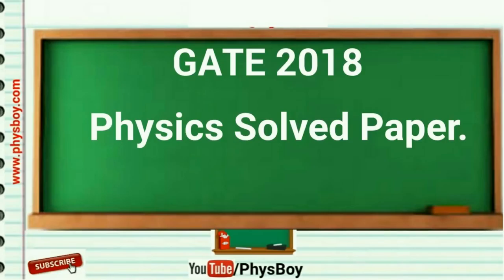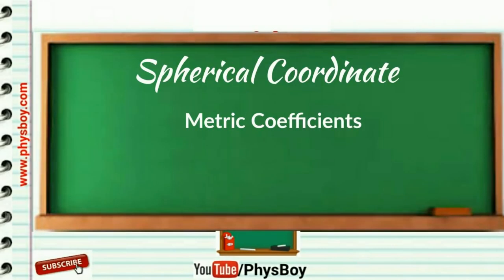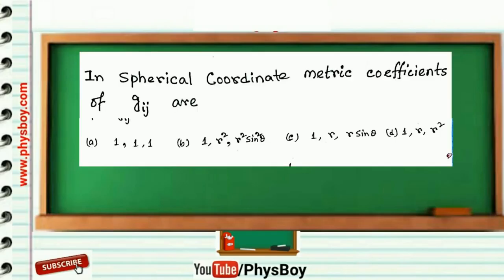Now I am going to share a metric coefficient related problem. The question was: in spherical coordinates, metric coefficients of g_ij are: option a: 1, 1, 1; option b: 1, r square, r square sine square theta; option c: 1, r, r sine theta; and option d: 1, r, r square.